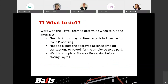So what do you need to do? You need to make sure you're working with your payroll team to determine when to run the interfaces. You need to import payroll time records to absence for cycle processing. You need to export the approved absence time off transactions. And with that export, are you exporting right to the payroll system, or are you sending it to your timekeeping system to have those transactions come in that way? Don't do both — that's when you're going to get the double transactions.